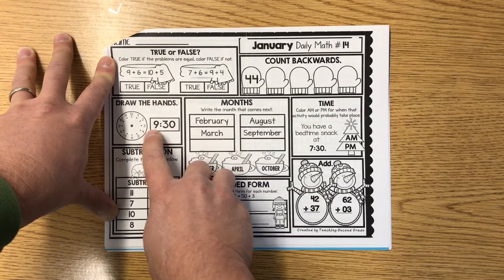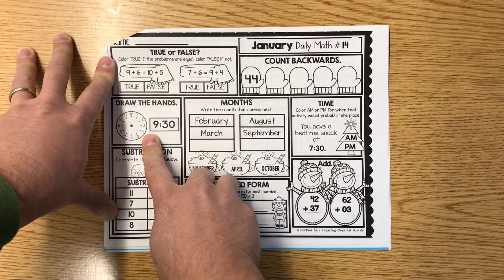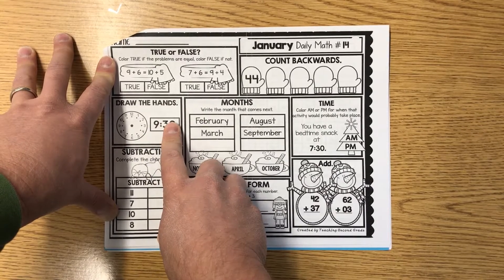Draw the hands. 9:30. There's the hour, there's your minutes. Remember, hour hand is a short hand. Minute hand's longer. See if you can figure it out.